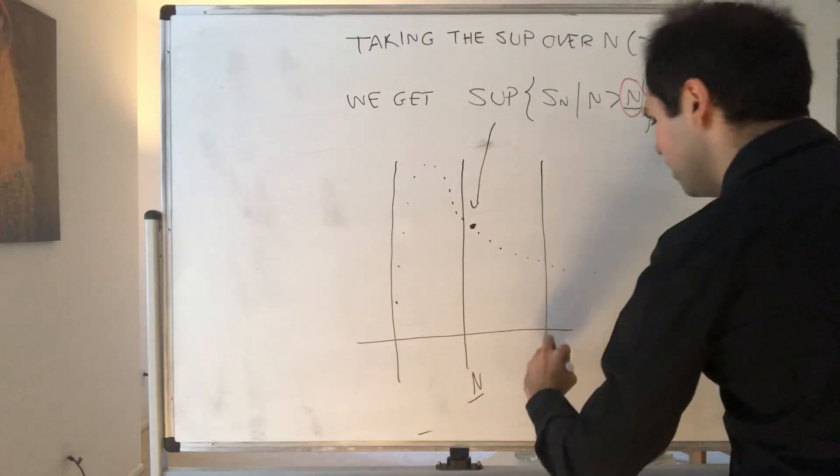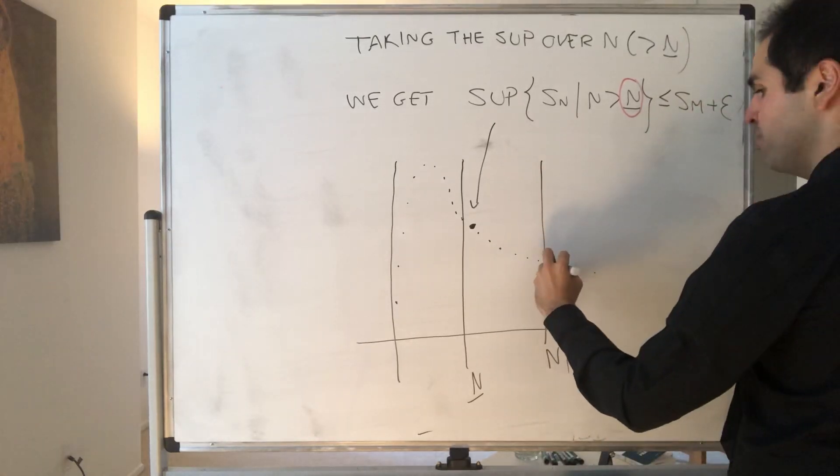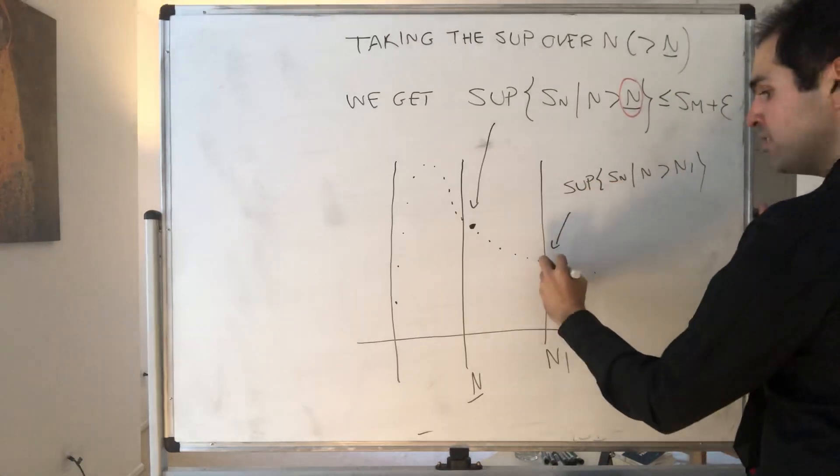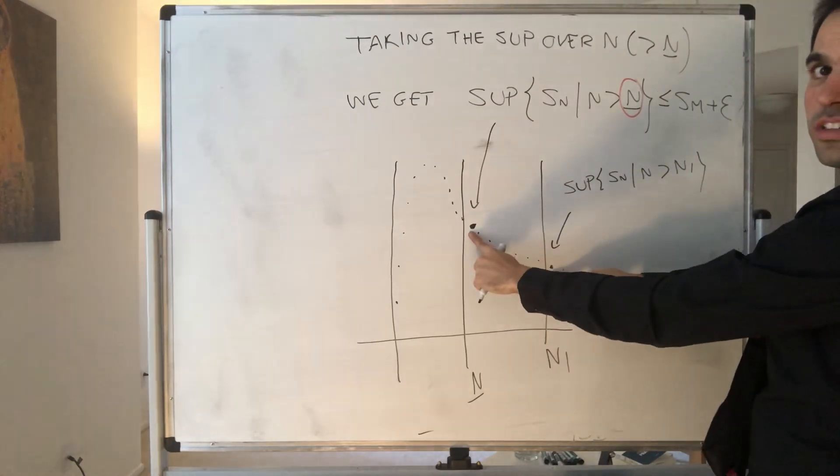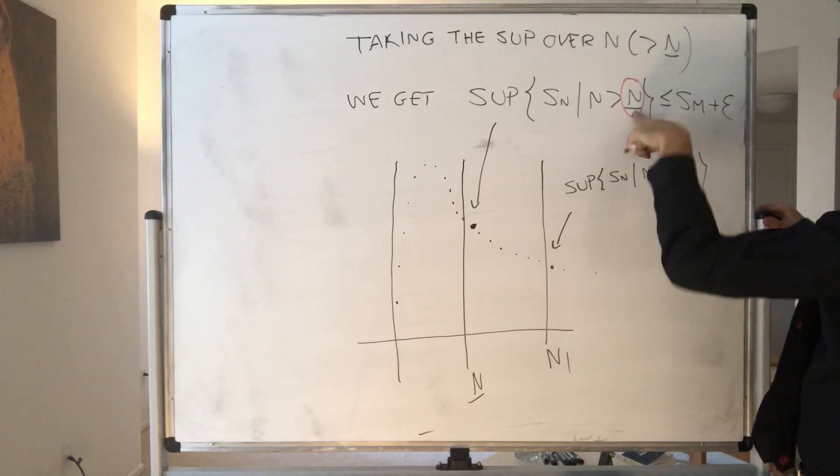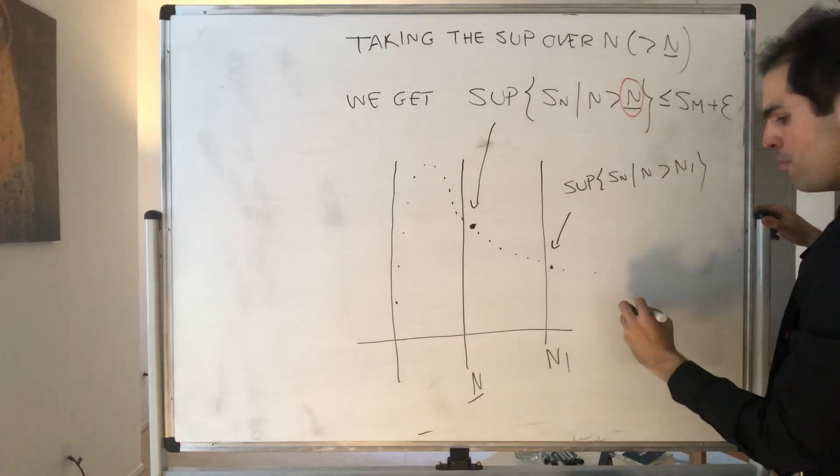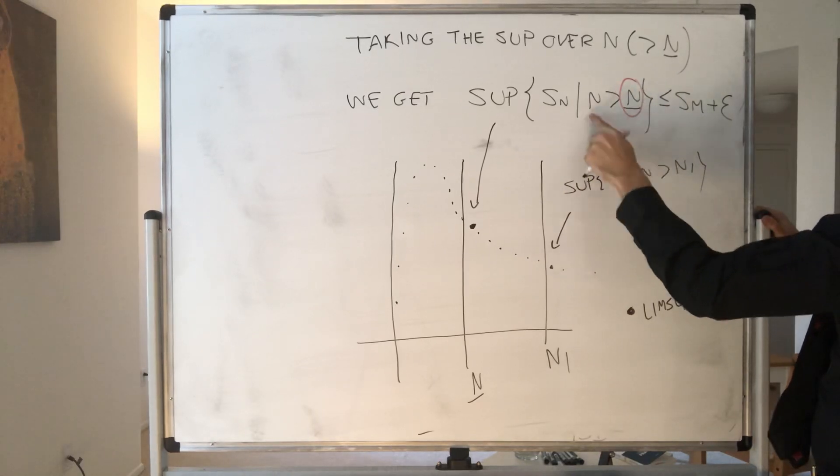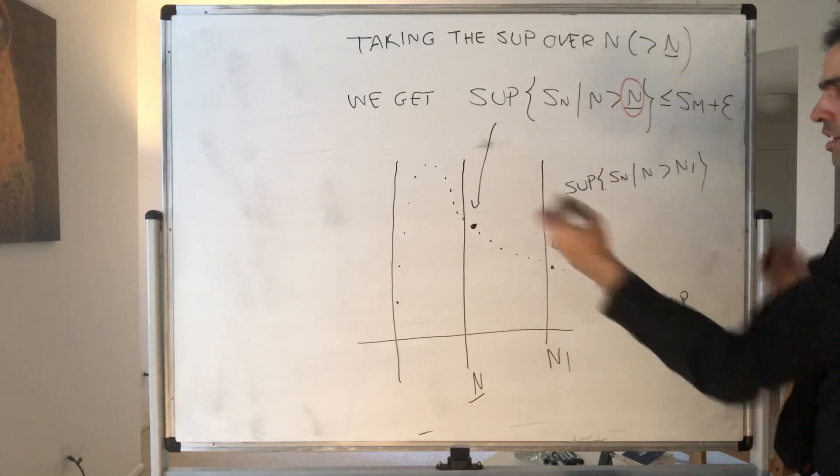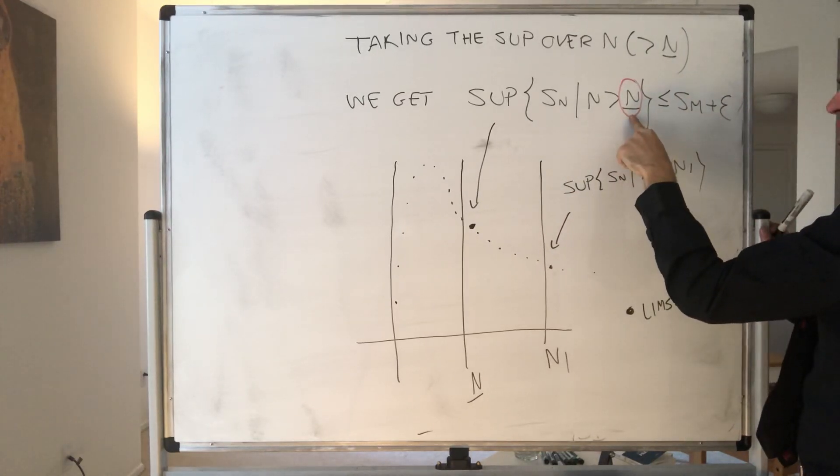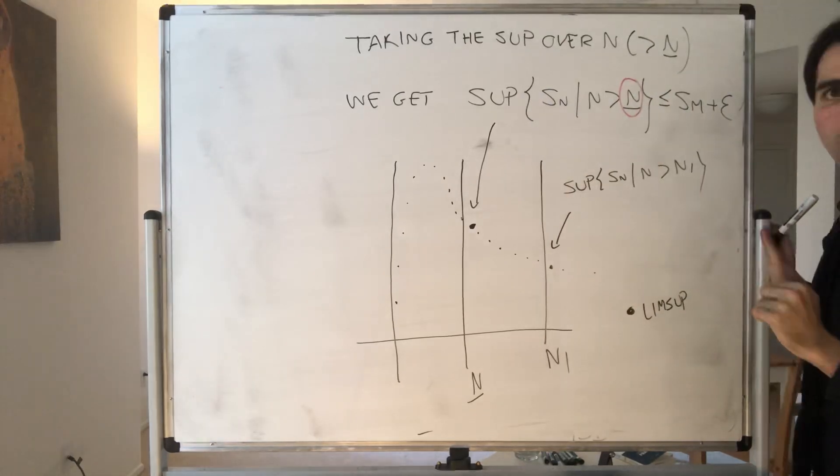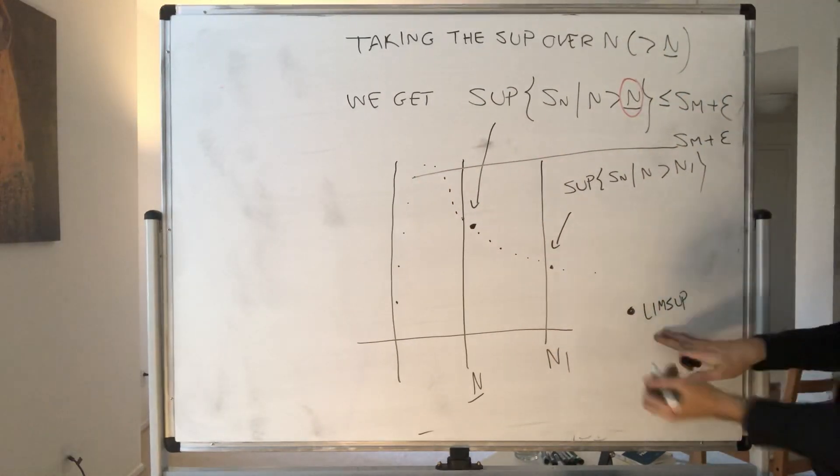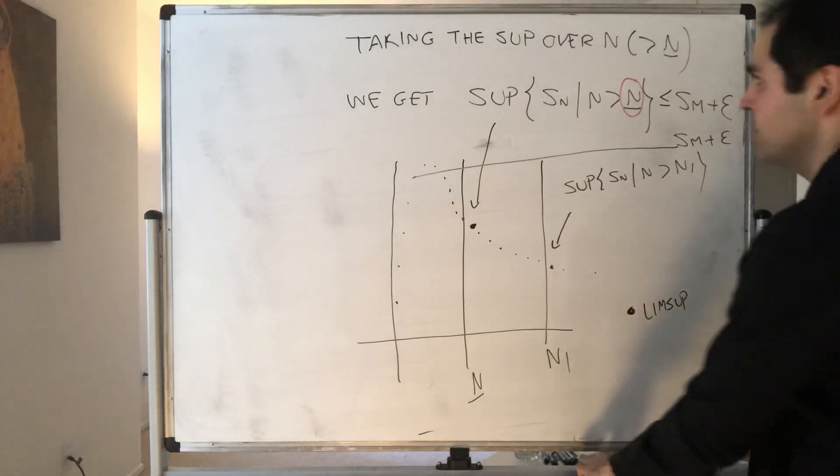So this sequence, depending on capital N, is decreasing. And remember, what is the lim sup? It's just the limit of that sequence. So it's the supremum of Sn where N is very big. In particular, no matter which capital N we choose, the lim sup will always be smaller than that. And because the original thing is less than Sm plus ε, we can actually conclude that the lim sup is also less than or equal to Sm plus ε.